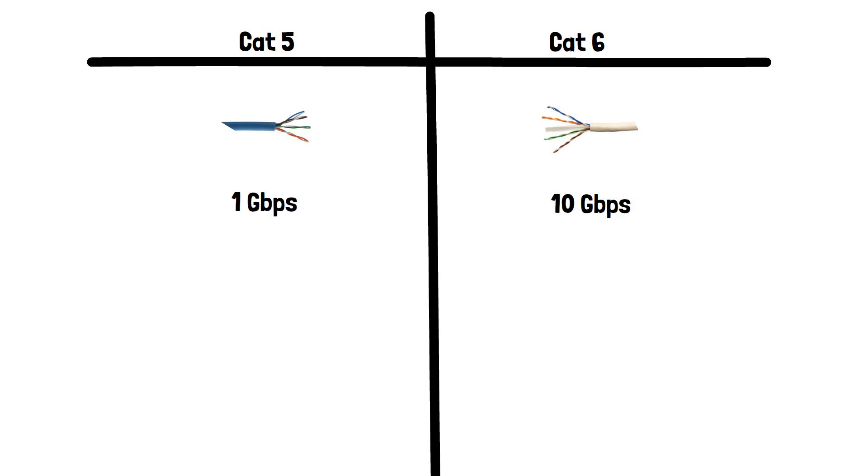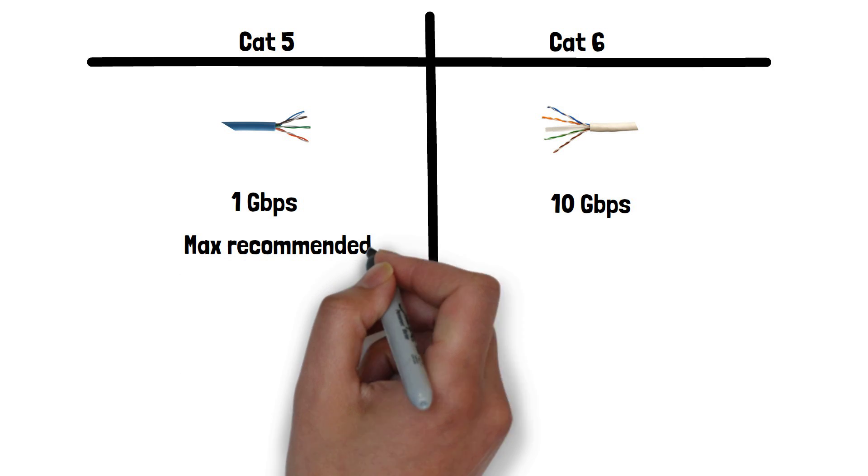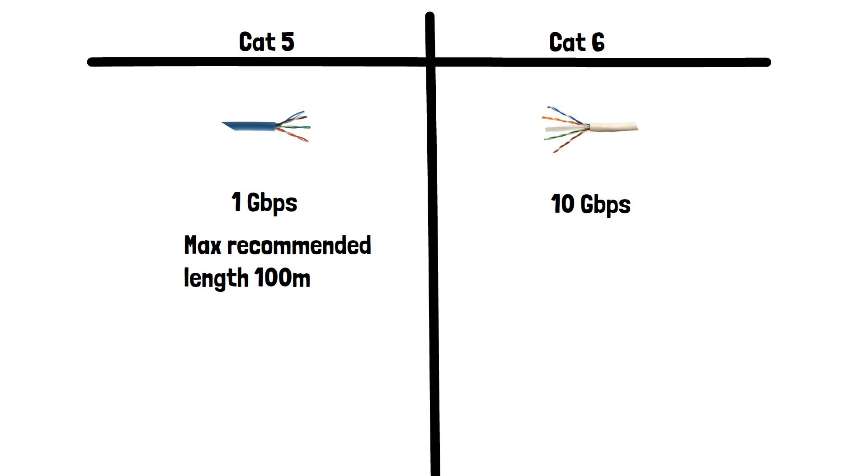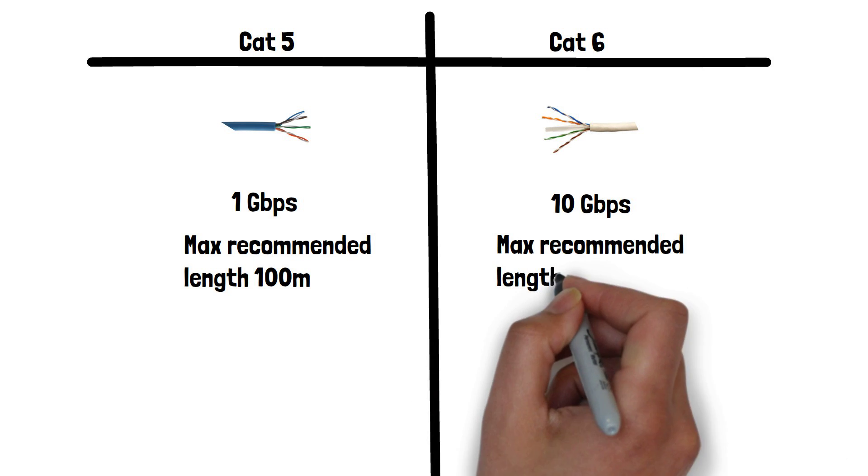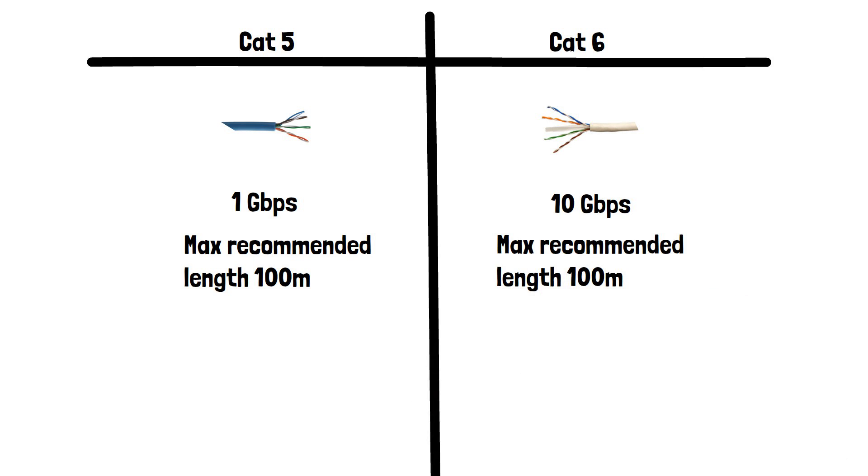Cat5 cables can support their max speed of 1 gigabit per second up to 100 metres of cable length. Cat6 can also support its max speed of 10 gigabits per second up to 100 metres. If the cable is longer than this, a slowdown or signal degradation is to be expected. How much this will slow down and impact you varies wildly on the quality of the cable.